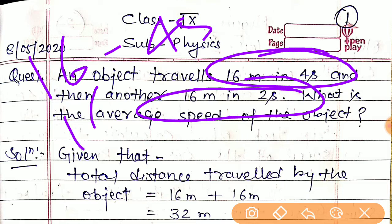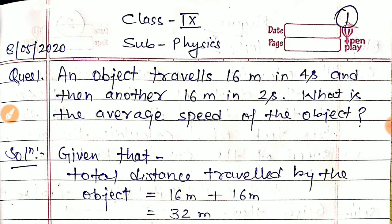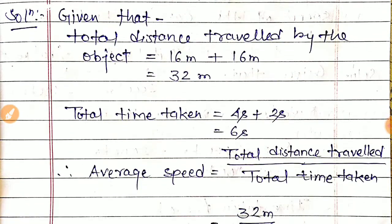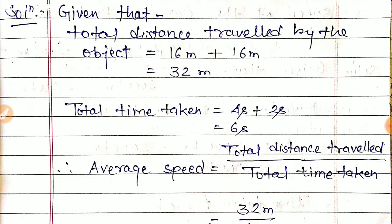In this case, you have to find out the average speed of the object. As we know, the formula for average speed equals total distance traveled divided by total time taken. You need to calculate the complete distance and complete time.